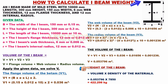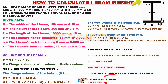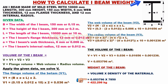We calculate the weight of the mild steel I-beam: weight = volume multiplied by density. The density of mild steel is 7850 kg/m³. 0.053796 × 7850 = 422.298 kilograms. Therefore, the weight of the mild steel I-beam is 422.298 kilograms.